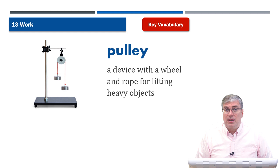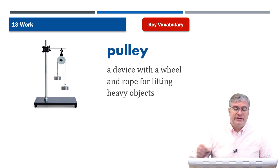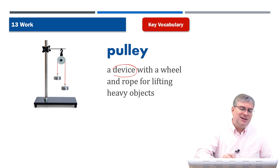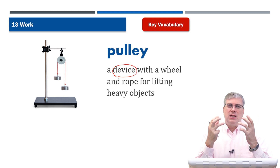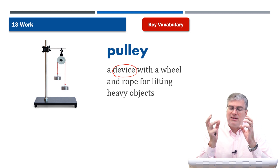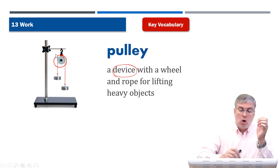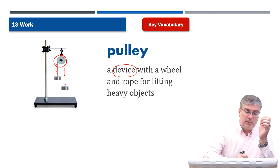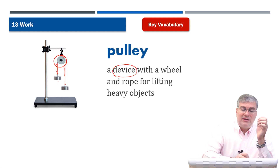The first word in our vocabulary section is pulley. What's a pulley? A pulley is a device — a simple machine or tool that you can use to perform some action. A pulley is a device with a wheel — you can see the wheel here — and a rope, and you see the rope sticking up here, for lifting heavy objects.